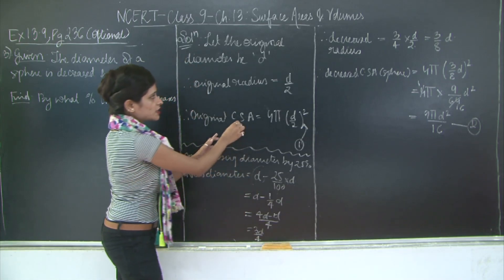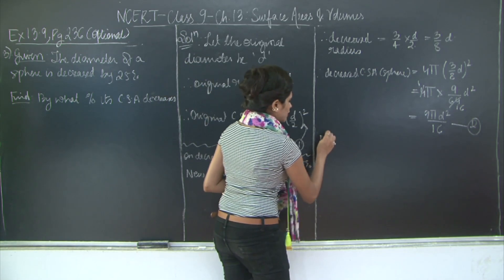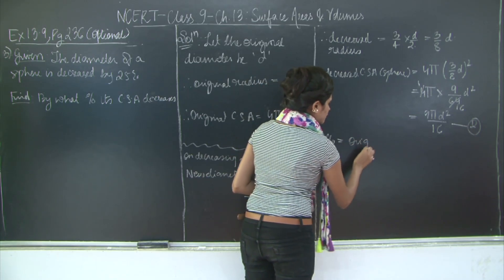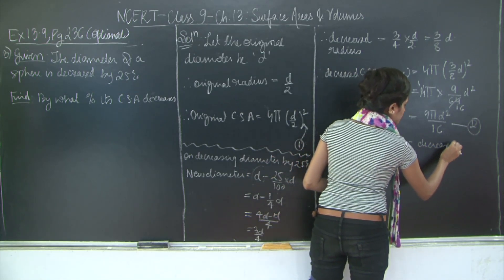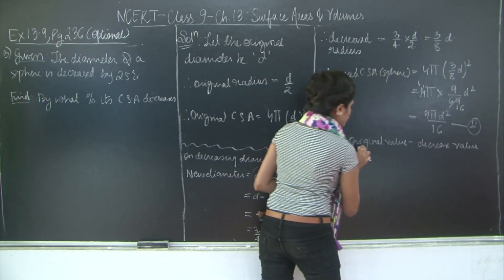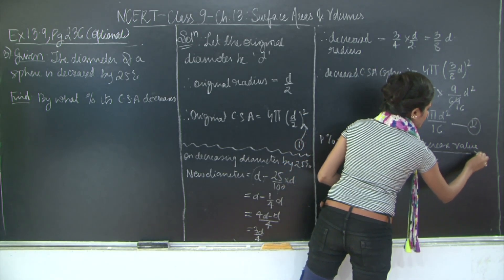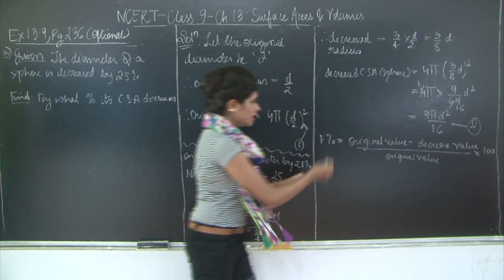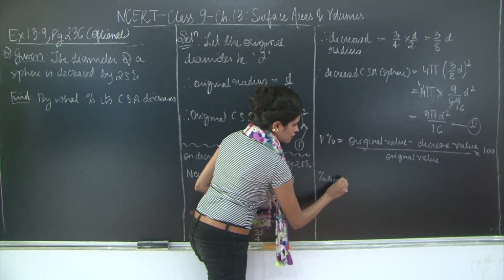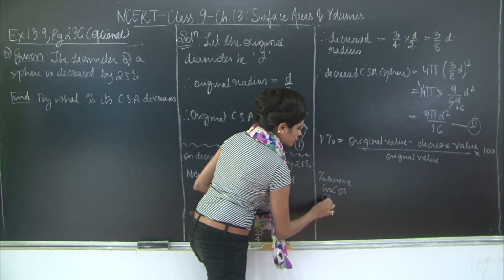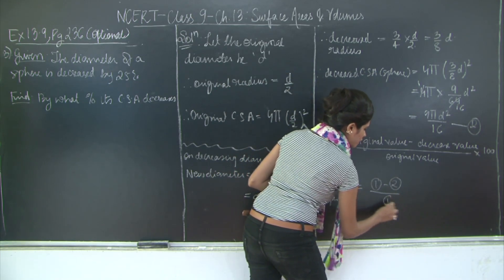Now we have the original curved surface area and the decreased curved surface area. We need to find the percent decrease. The percent decrease of anything is given by: (original value minus decreased value) divided by original value, this entire thing multiplied by 100. Similarly, the percent decrease in curved surface area will be (equation 1 minus equation 2) divided by equation 1, into 100.